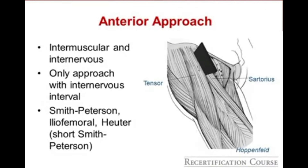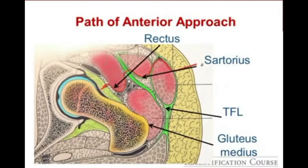The anterior approach is the only approach that has a true internervous interval. The intramuscular interval is between the tensor and the sartorius, as depicted here. The direct anterior approach goes by a number of different names. Superficially the path passes between the sartorius and the tensor fasciae latae, and deep in between the rectus and the gluteus medius, as depicted in this slide.